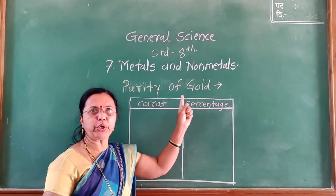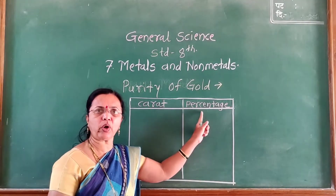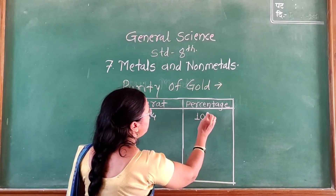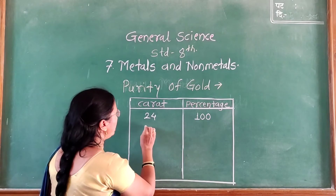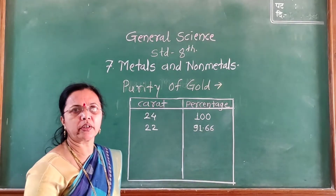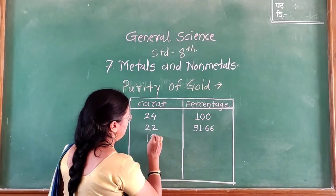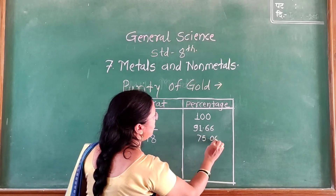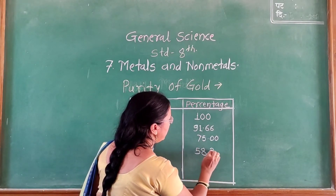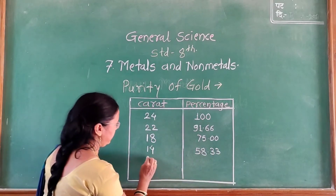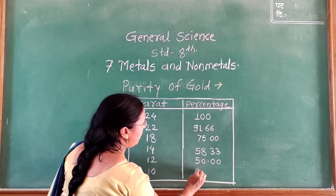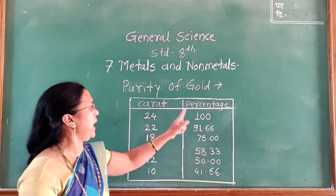In this chart of purity of gold, the first column is karat and the second column is percentage. 24 karat gold is 100% pure gold. 22 karat gold is 91.66% gold. 18 karat gold is 75% gold. 14 karat gold is 58.33%. 12 karat is 50%. 10 karat is 41.66%.